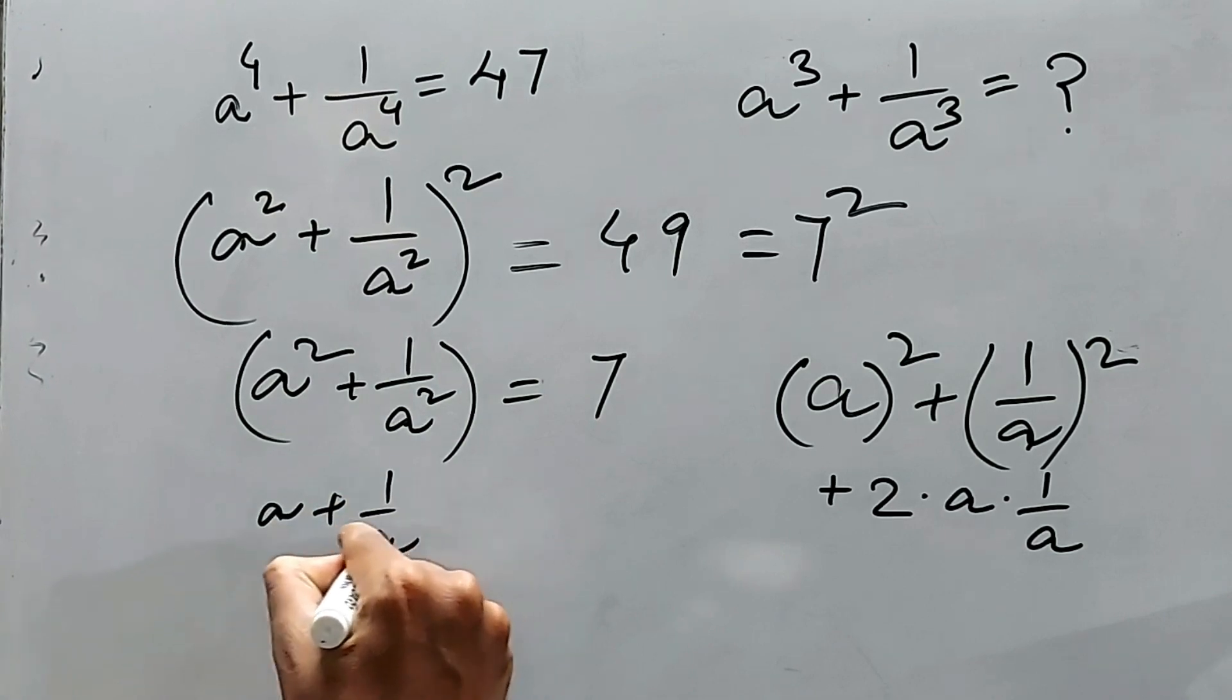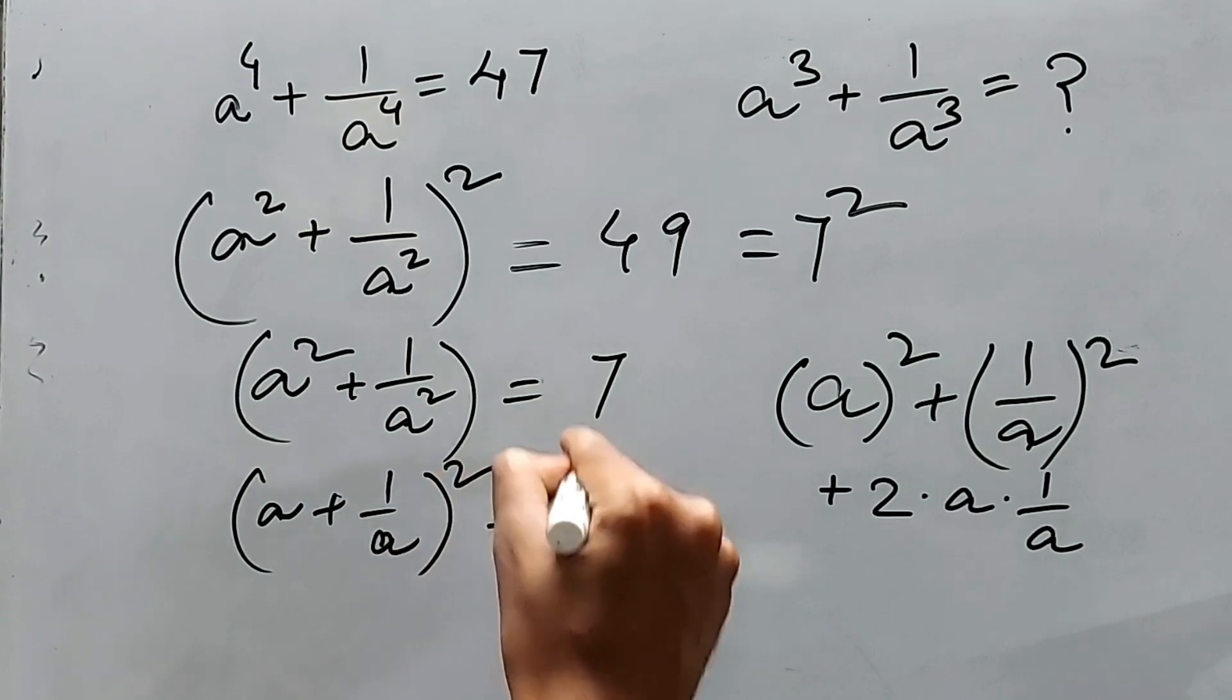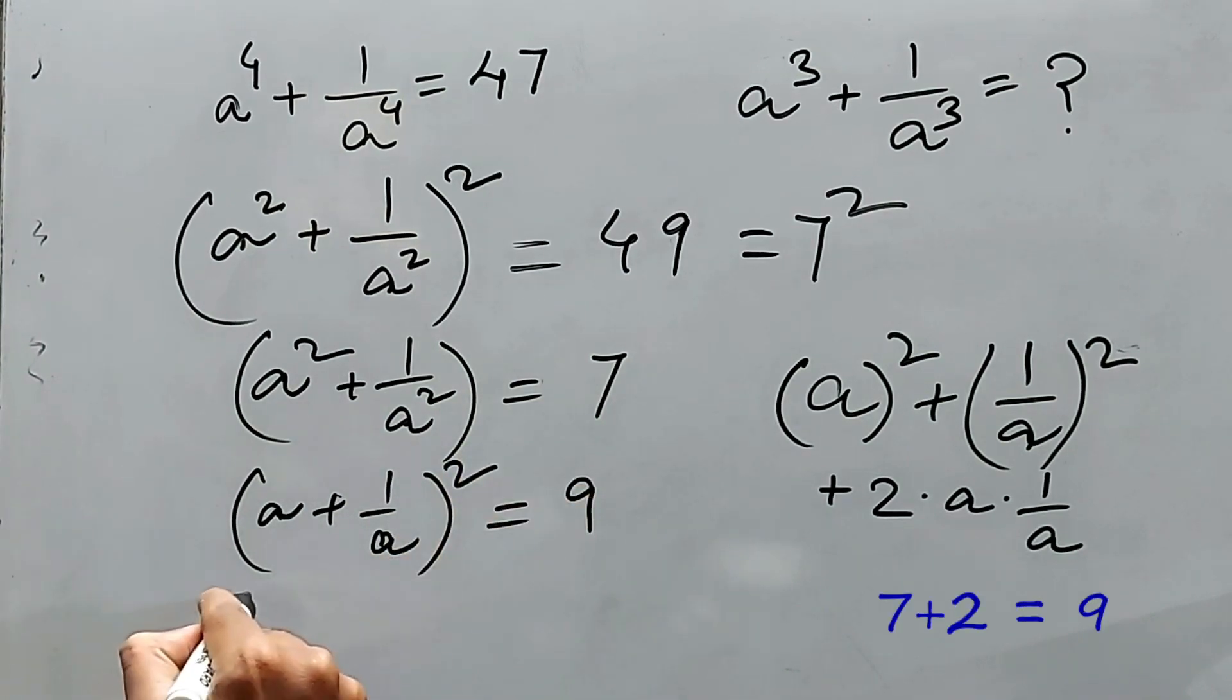And we are getting (a + 1/a) whole square = 9. Again, taking the square root, we are getting a + 1/a = 3.